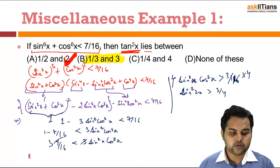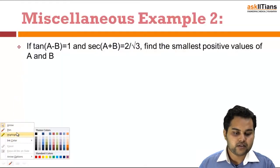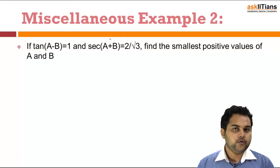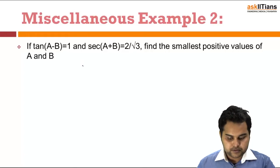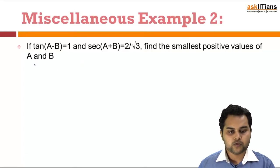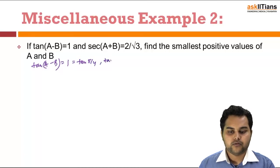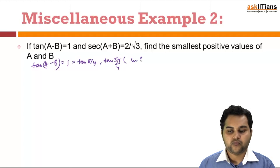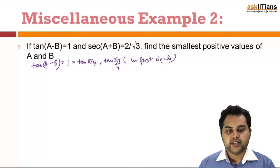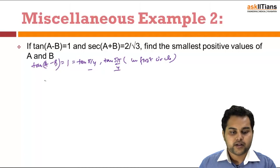Moving on to the next example: tan(a - b) = 1 and sec(a - b) = 2/√3. We have to find the smallest values of a and b. If I write tan(a - b) = tan(π/4) or tan(5π/4), taking the first quadrant for the smallest values, there will be two values: a - b = π/4 or a - b = 5π/4.